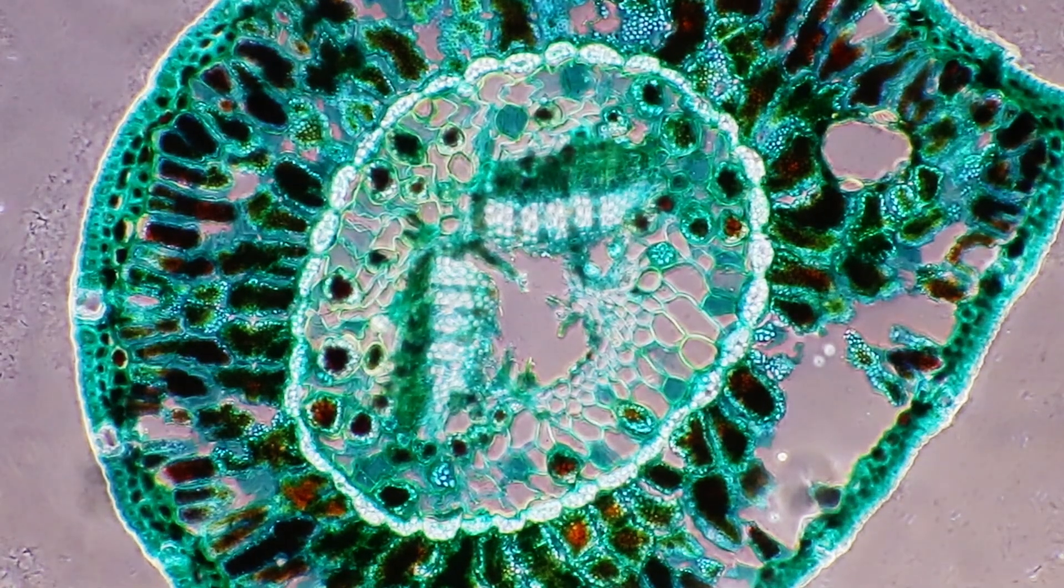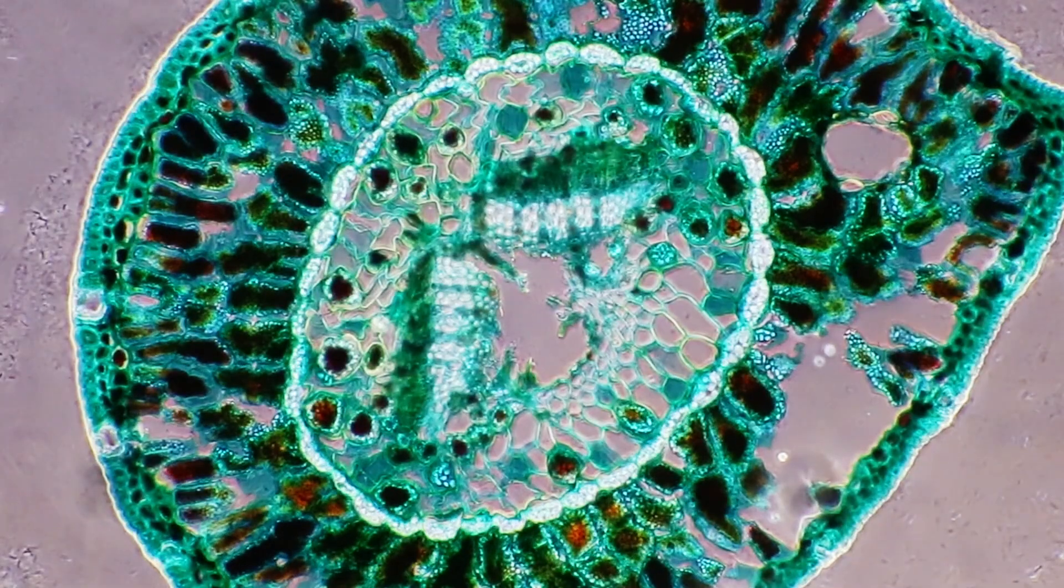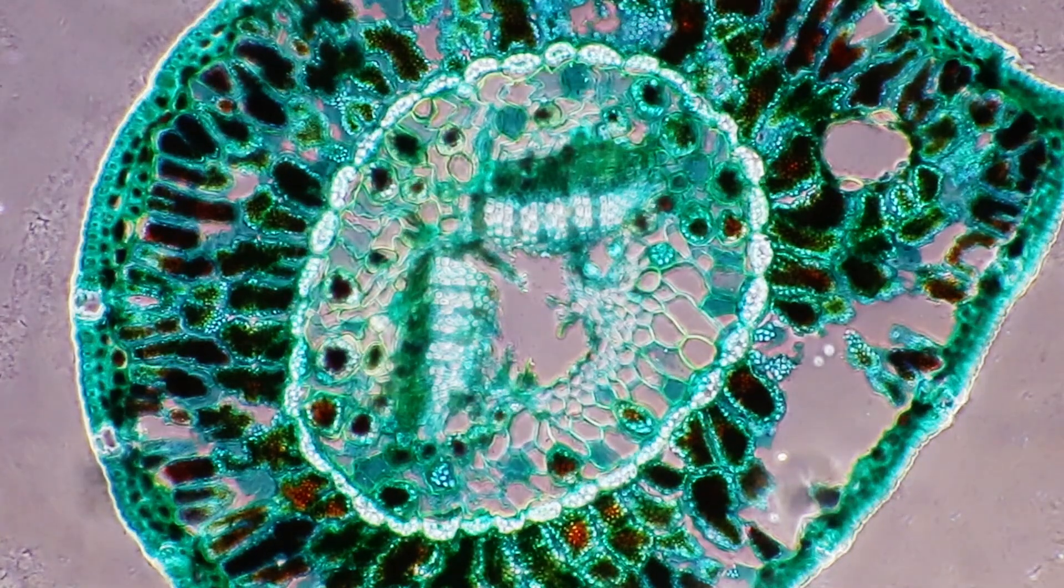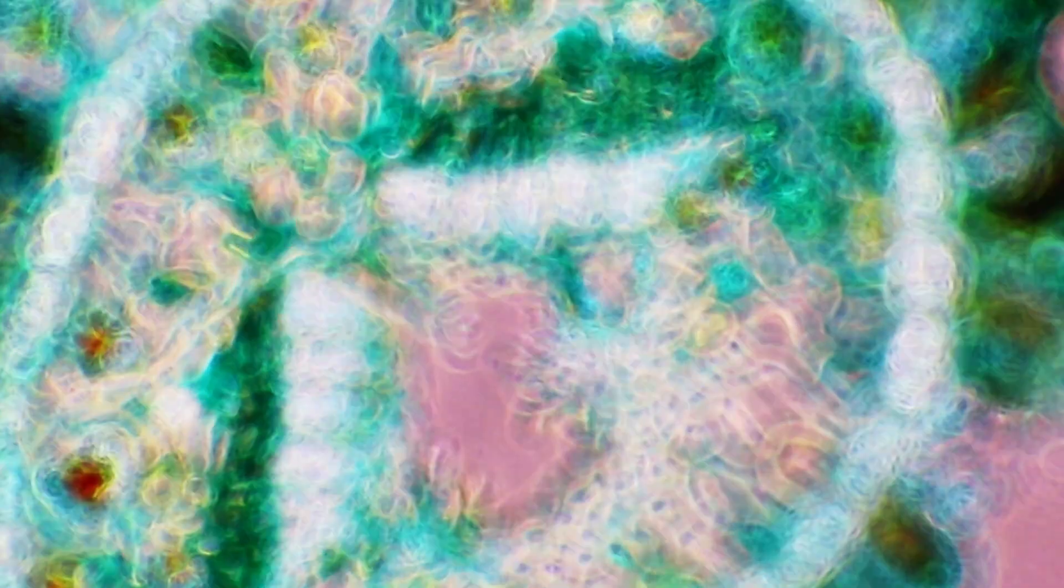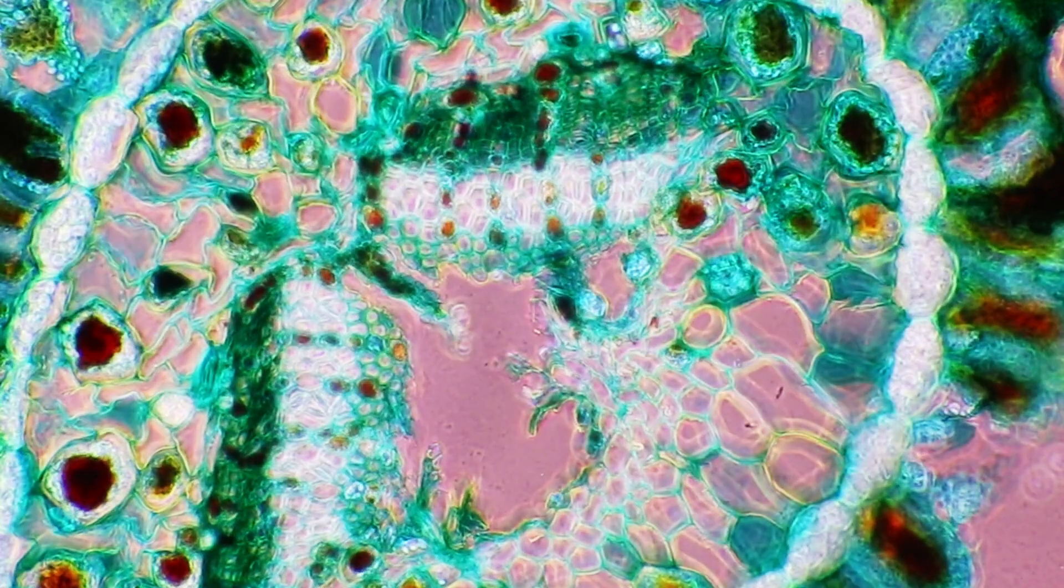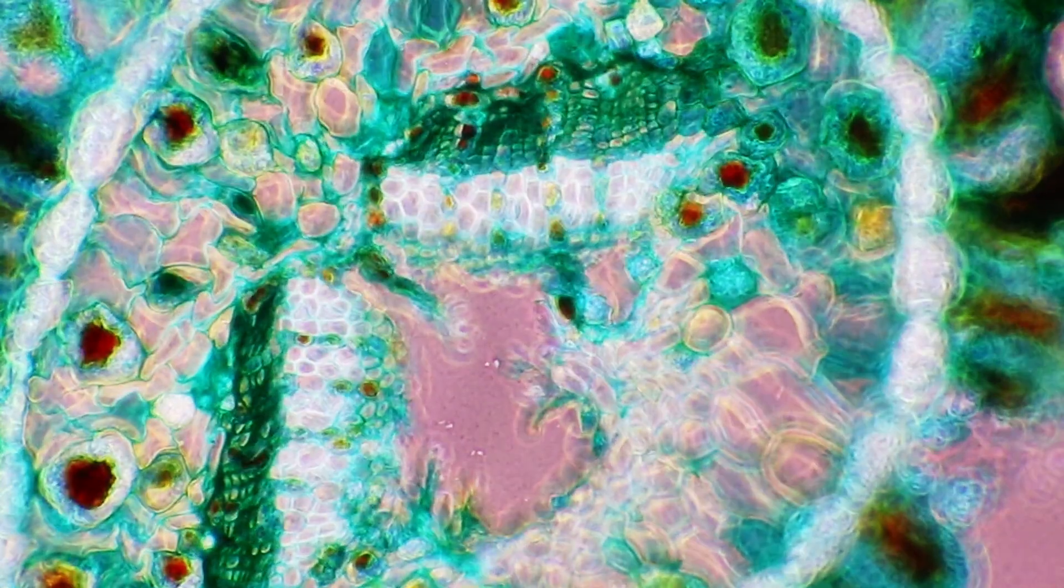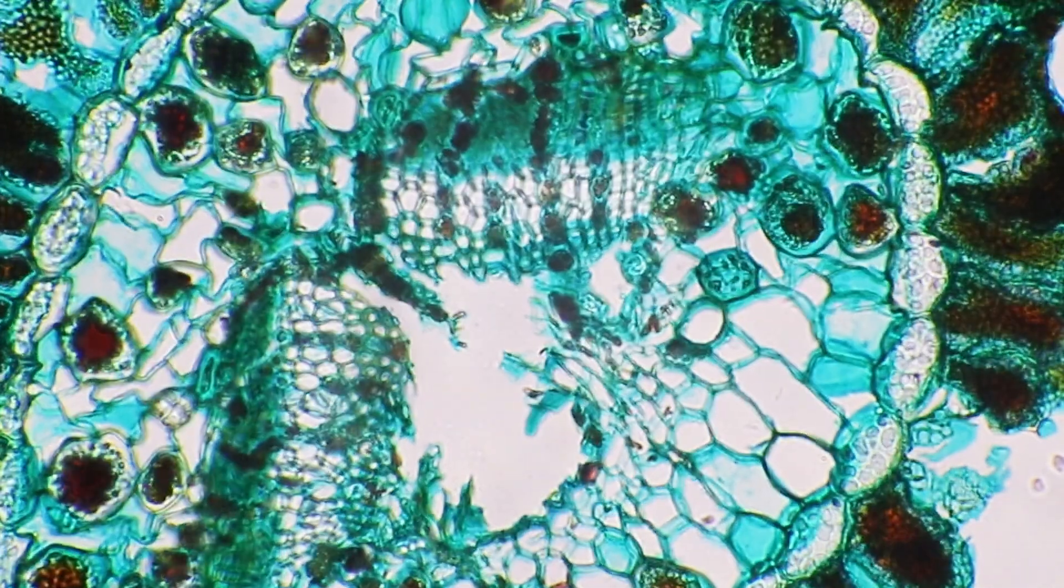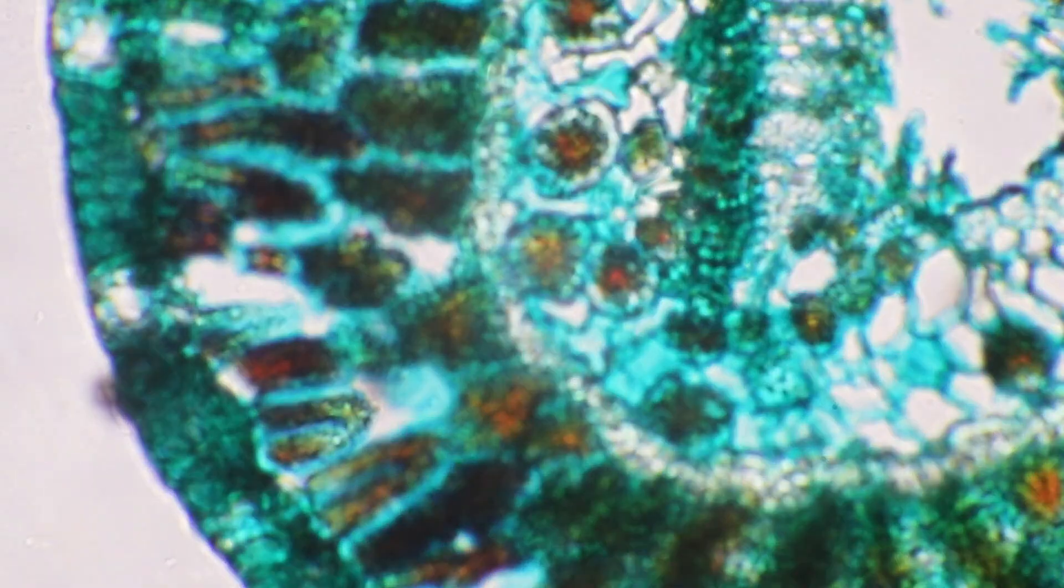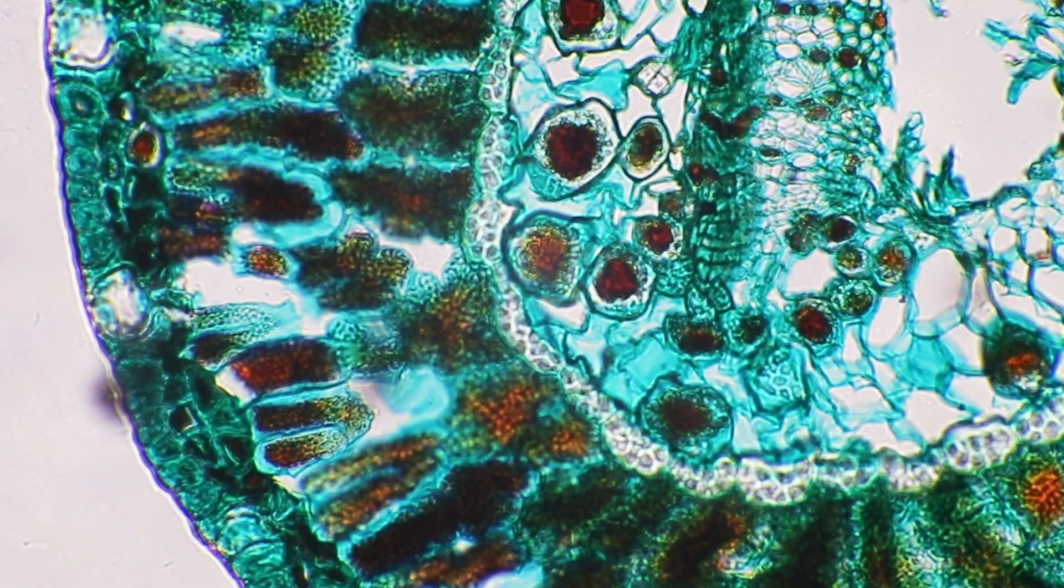This one over here is now the cross section of a pine leaf a plant also in phase contrast. Now and for comparison this is now in bright field and we're now going back to phase contrast and we can now compare again how the different imaging techniques are actually different. So it depends really on what you want to observe you can essentially then choose the appropriate technique by simply rotating the condenser of the microscope.